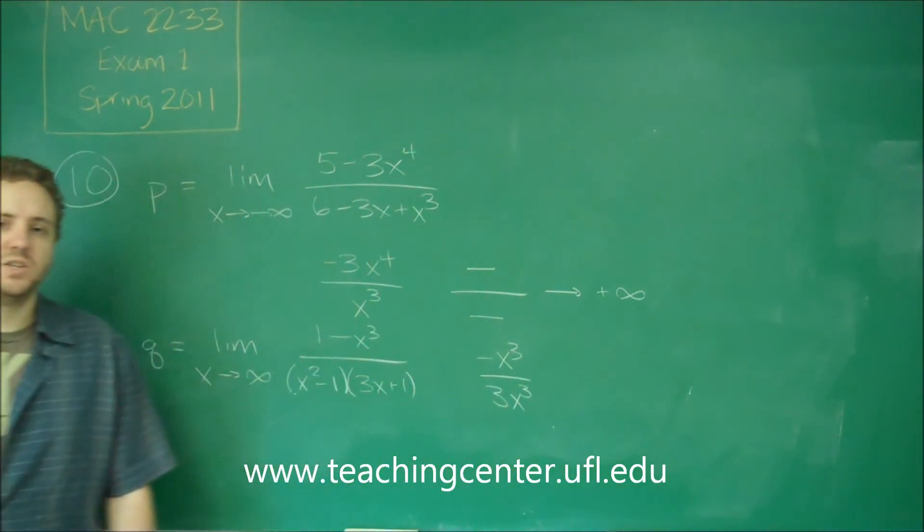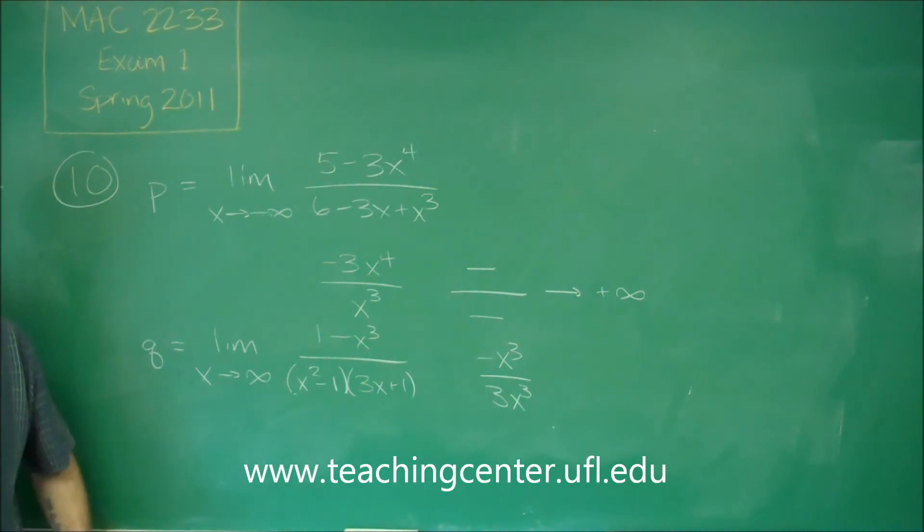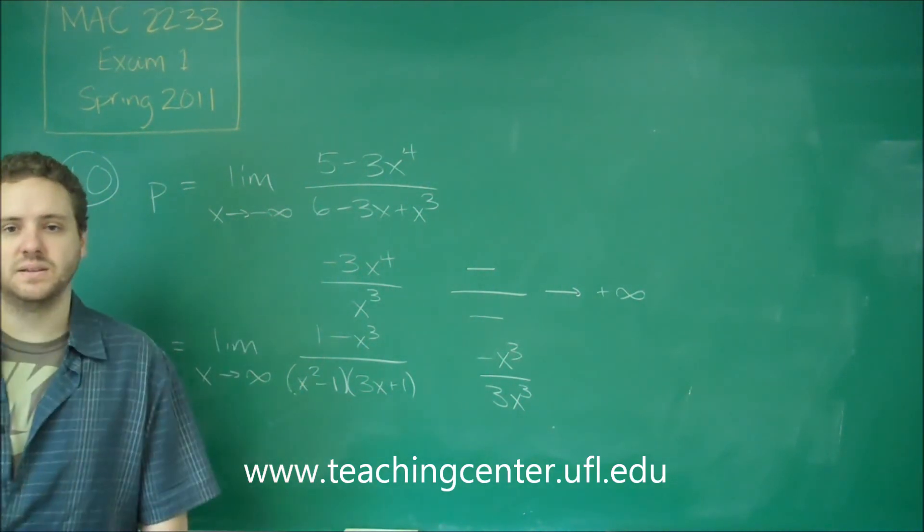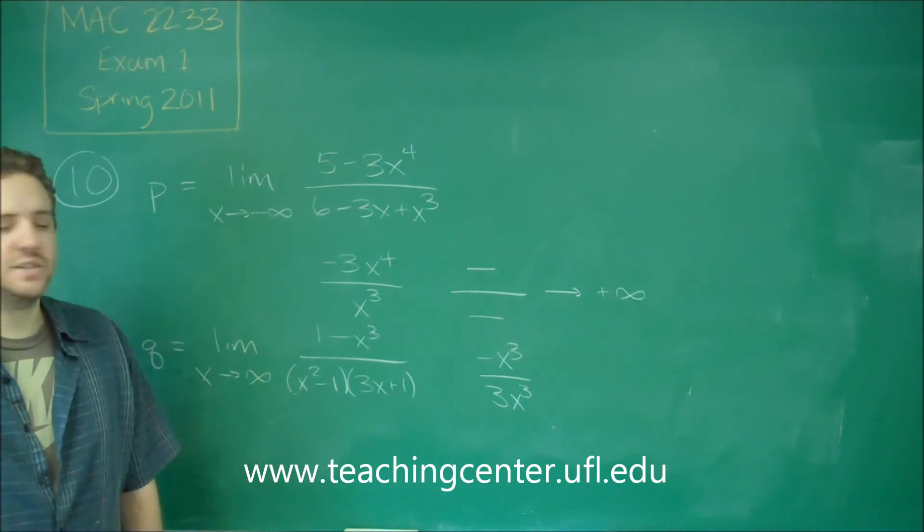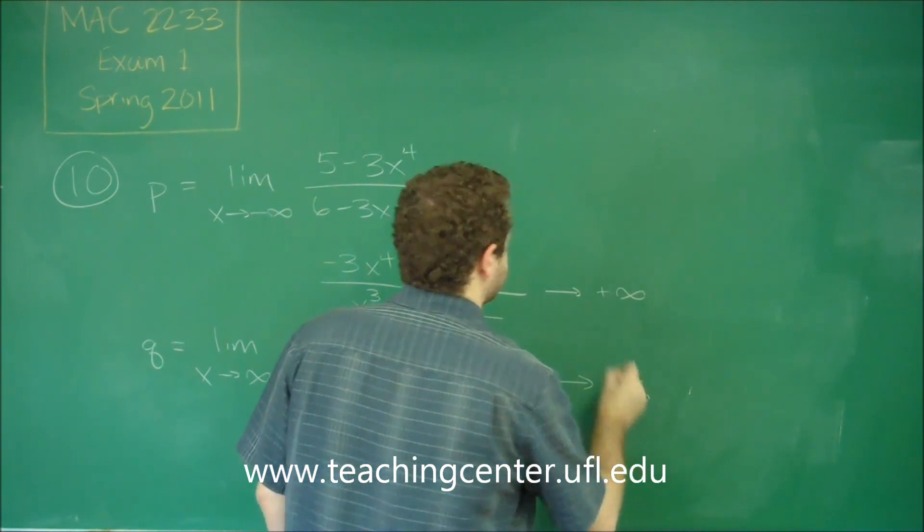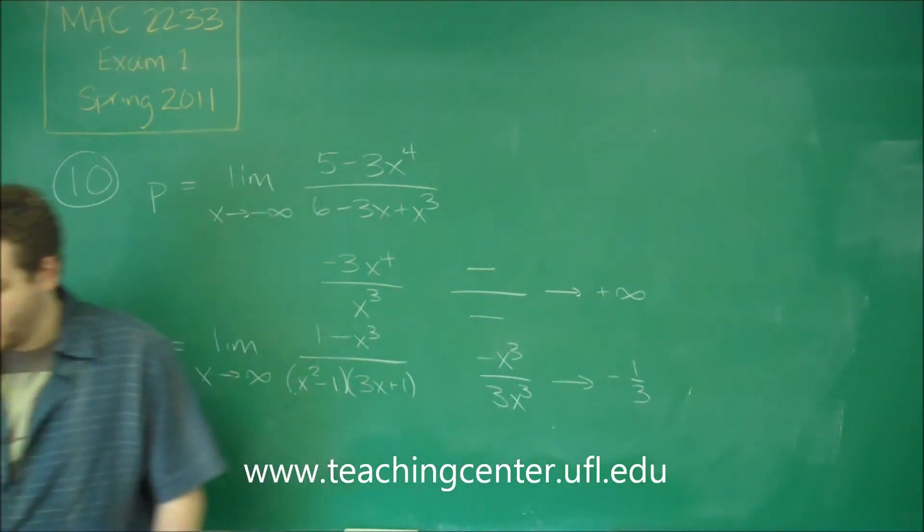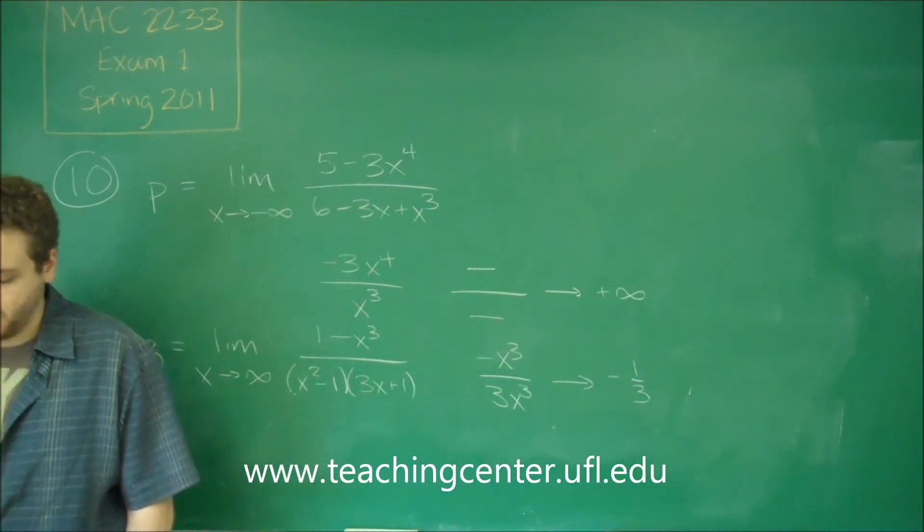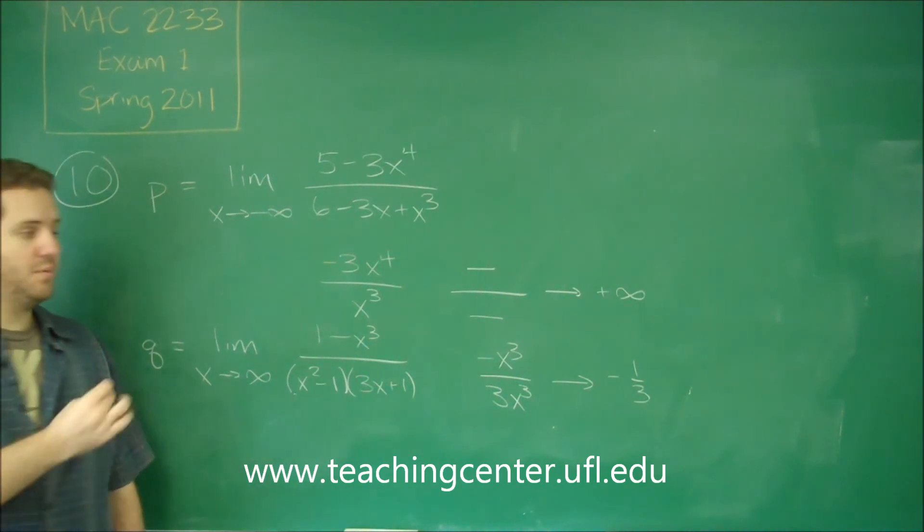So now we have the situation where the degrees are equal. If the degrees are equal, you can just cancel them out when looking like this. We're saying, what are the coefficients? We have negative 1 over 3, negative 1 third. You can see that matches our answer choice B, even though we already knew it was that one from the first one.